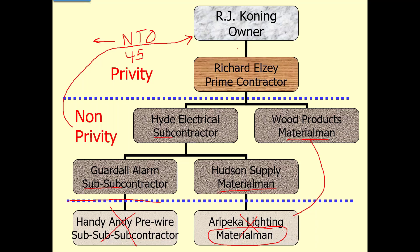The notice to owner can be served to the owner in three different ways as a non-privity contractor. You can send it certified or registered mail. As long as you get a signature for it, you're going to be okay — so FedEx, UPS, that'll all work. So certified or registered mail is the first method.